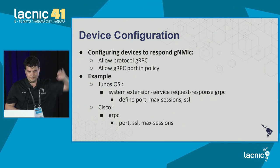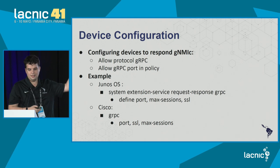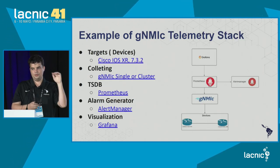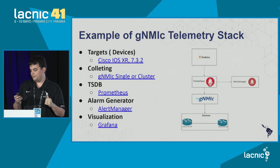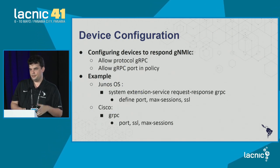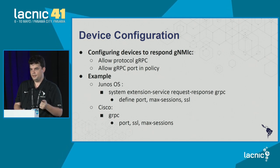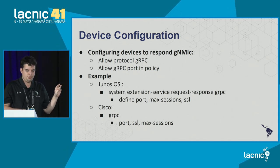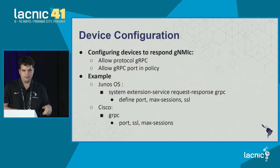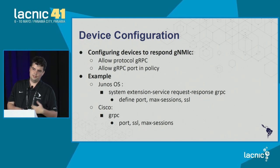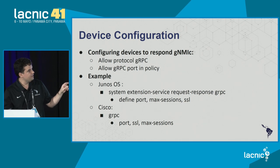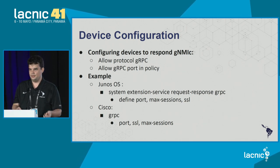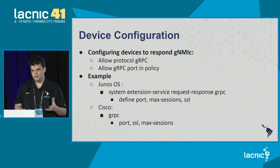Let's start breaking down the stack by parts. On the device, the configuration is very simple — you just need to allow gRPC. I put the configuration examples for Juniper and Cisco, which I mostly work with. You can also do this in Huawei, I think it's under SystemView gRPC. Once aligned, allow the port, set the configuration, and allow this in your policy so the device can listen.